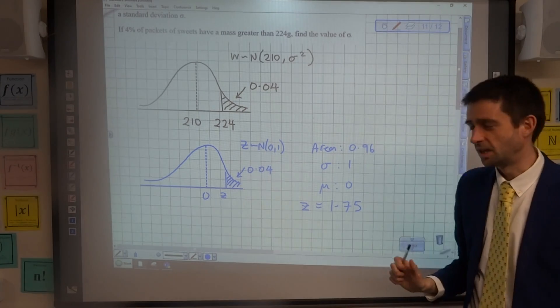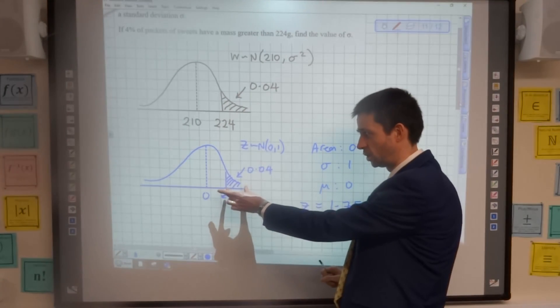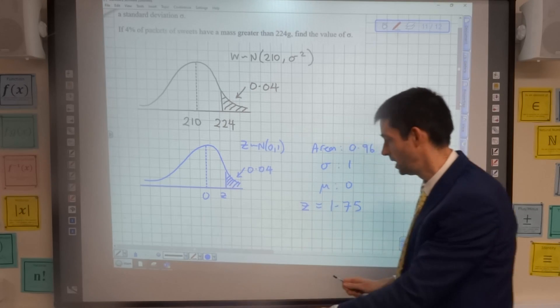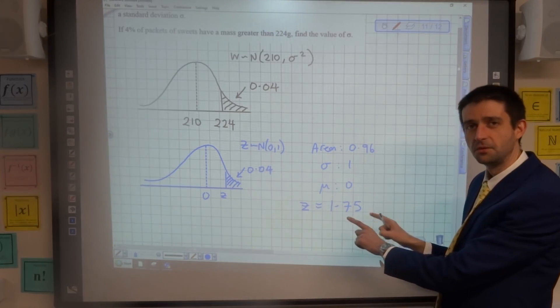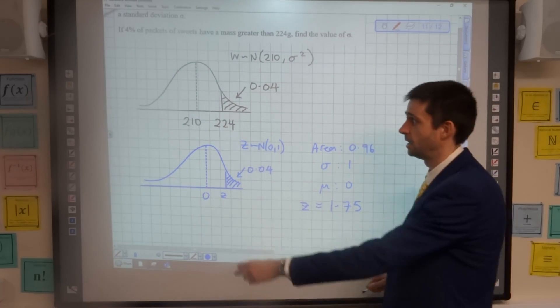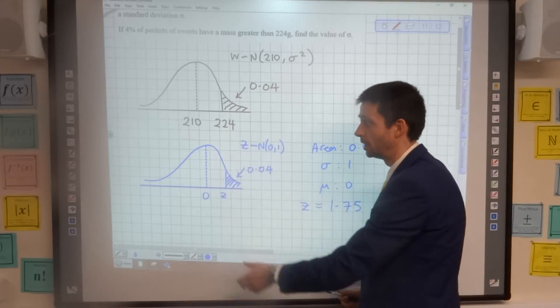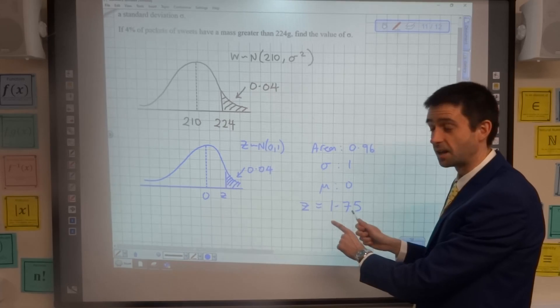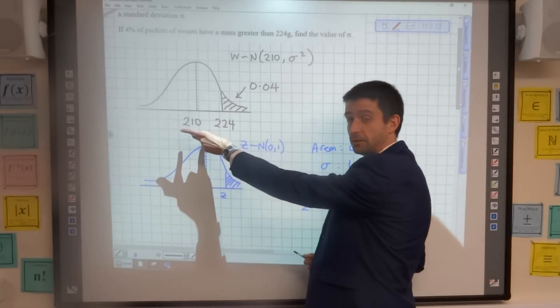What that means is to have only 4% chance of being above this value, you have to be 1.75 standard deviations above the mean. So what that tells me is that 224 must be 1.75 standard deviations above 210.